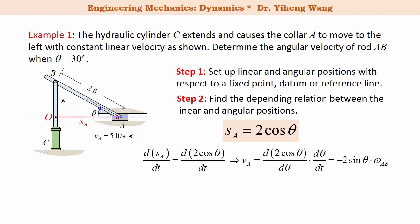Recognize that dS_A/dt is the linear velocity V_A and d theta/dt is the angular velocity omega. Since theta equals 30 degrees, V_A is a constant 5 feet per second in the opposite direction of S_A, we can solve for omega AB.